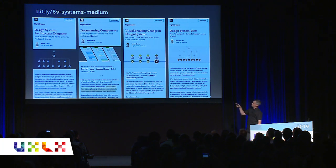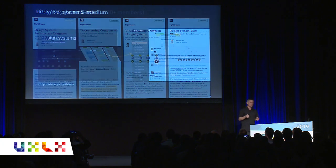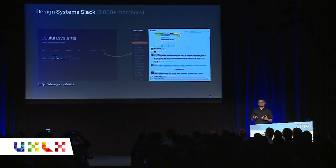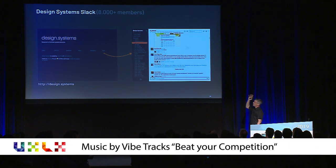I do a lot of writing on this stuff. There's an article on the diagramming, and I talk about design system tiers and visual breaking changes and other things — visit that on Medium. If you're in the design system space but not yet a member of Design System Slack, there are over 10,000 members. Go to design.systems to get invited — there's a robust array of topics and I'm one of the admins. We'd love to see you there and talk more about design systems. Thank you very much.